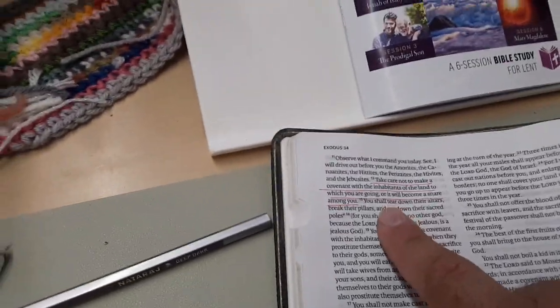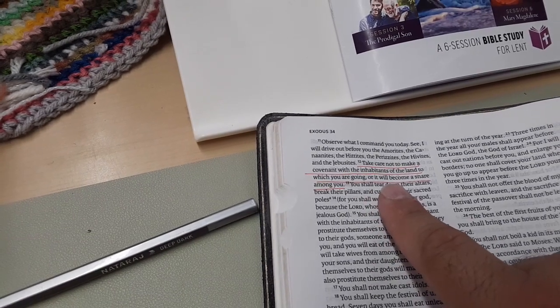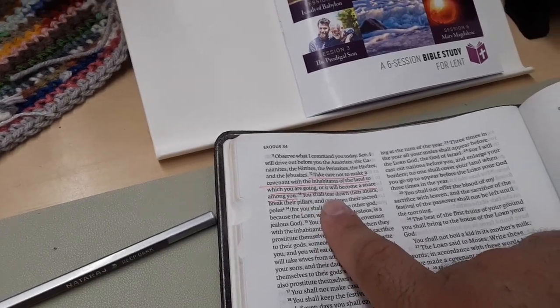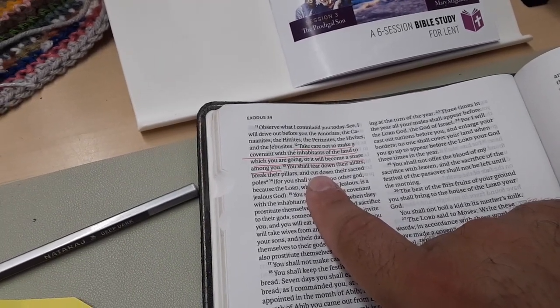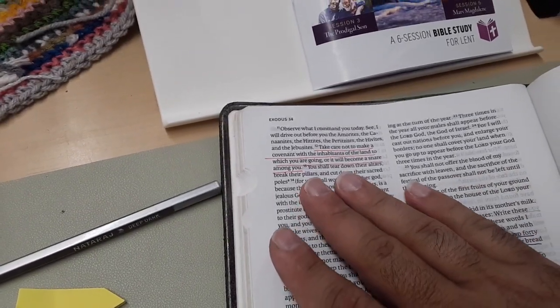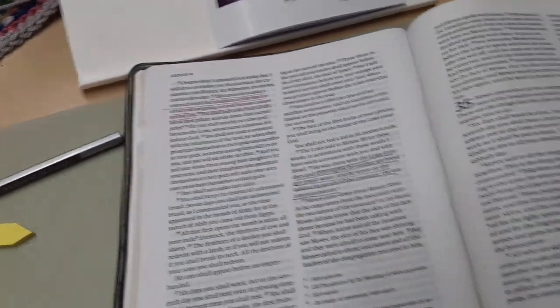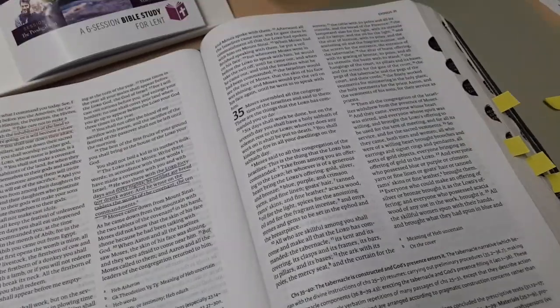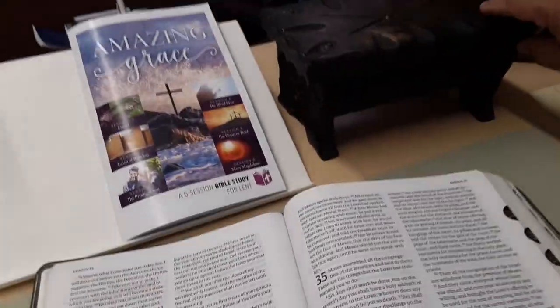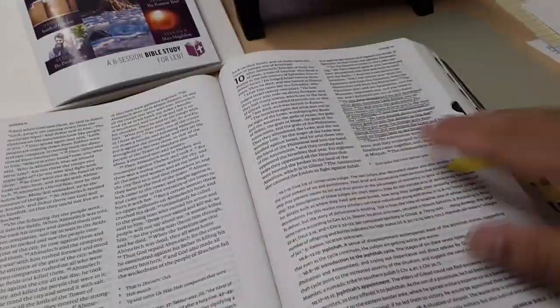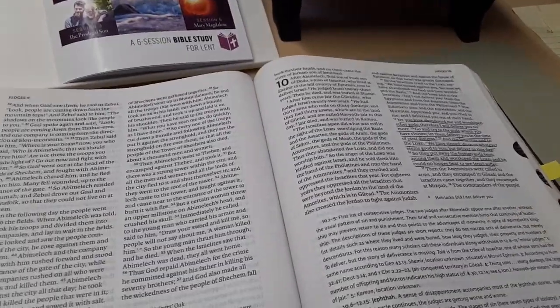We have red up here. Take care not to make a covenant with the inhabitants of the land to which you're going, or will be a snare among you. So that's a warning against allegiances, which to me has to do with more peacemaking, justice or violence or avoidance of violence, or let me see what else red is war. So allegiances can't make allegiances for the sake of self-defense or war.